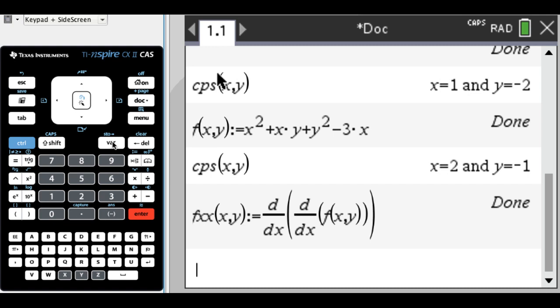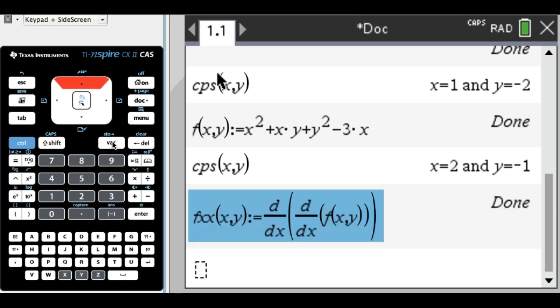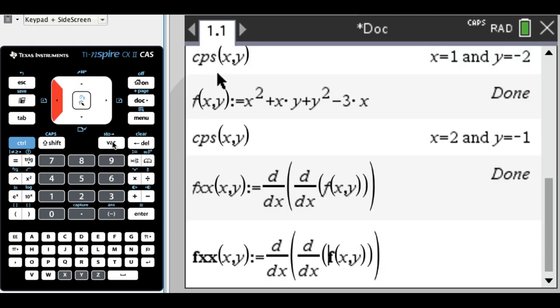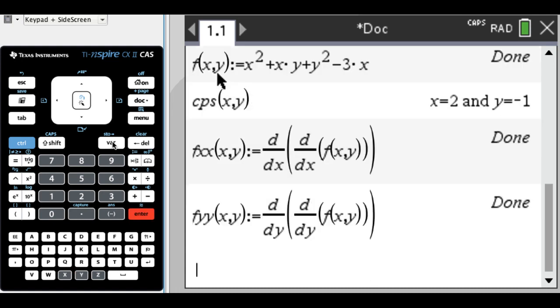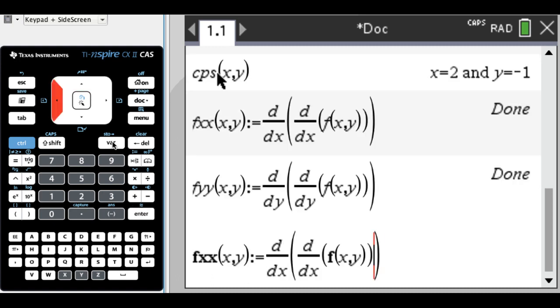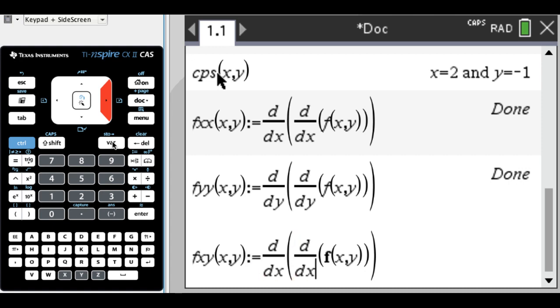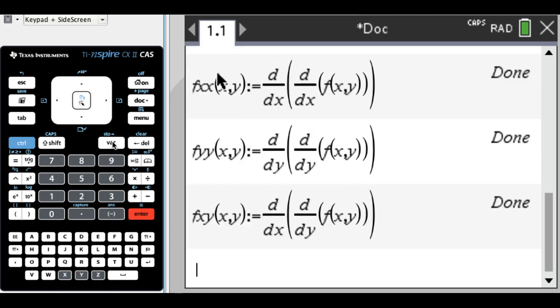And now I need to do y, y, and x, y. So what I'll do is I'm just going to paste this down and go through it and edit some things. So delete, delete, y, y. Down here, delete, change that to y, change that to y. And then I'm going to do it one more time for x, y. You could do it for either of these. It wouldn't make a difference. So x, y, and then change this one to y. OK.